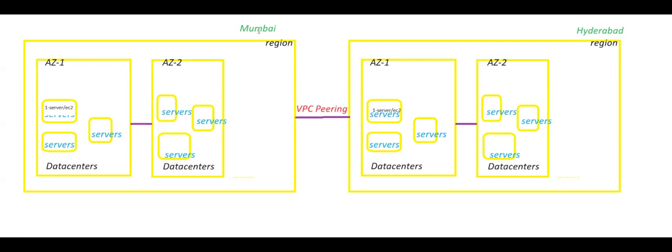By using VPC peering we can connect different regions — this is one region and this is another region. We can connect those two regions by using VPC peering. After VPC peering, we can be able to provide communication between the servers present in different regions.